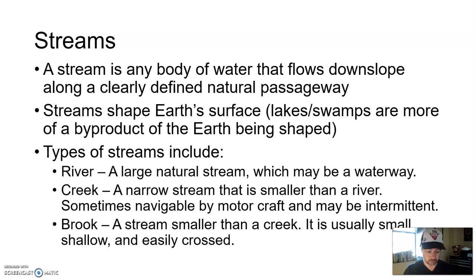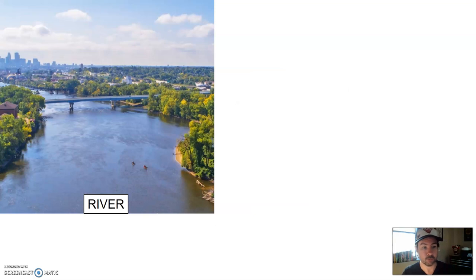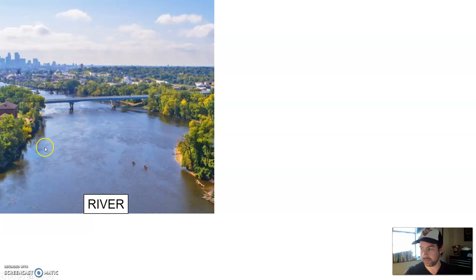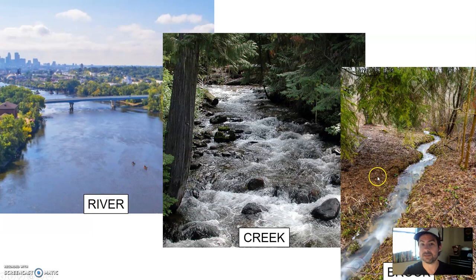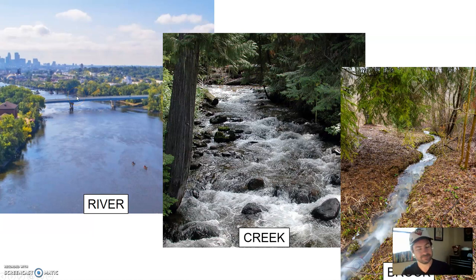Here's a way to remember the difference between a river, creek, and brook. A river — you could not jump across it, nor could you probably throw something across it. Rivers are big streams. Creeks you probably couldn't jump across, still a little too wide, but you can definitely easily throw a rock or a baseball over it. A brook you could easily throw something over as well as jump over. So: if you can do both, it's a brook; if you can throw but not jump, it's a creek; if you can do neither, it's probably a river.